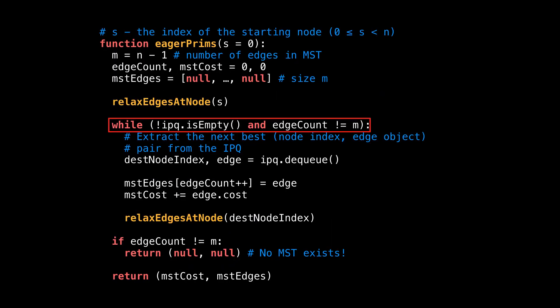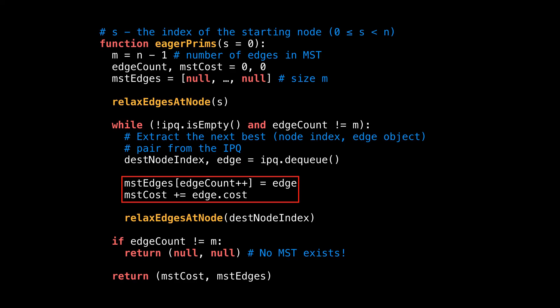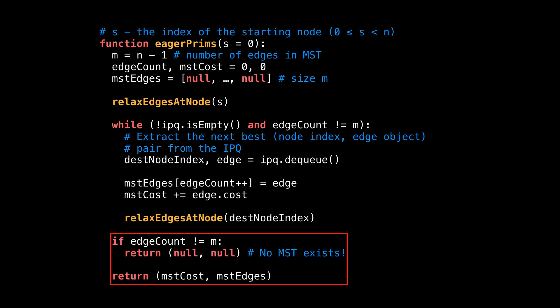Back inside the main method: keep looping while the IPQ is not empty and we have not yet completed the MST. Extract the next best node-index edge-object pair from the IPQ based on minimum edge cost. Include the selected edge as part of the MST and sum over the edge costs. Lastly, relax all edges of the current node and repeat until the loop breaks. Outside the main loop, check if we have successfully created a spanning tree — this might not be the case if some nodes are unreachable. Assuming that is not the case, return the MST cost and the edges which make up the spanning tree. And that concludes the pseudocode for Prim's algorithm.